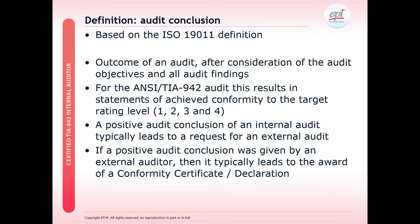Under the ANSI TIA 942 audit, this will result in statements of conformity achievement to a particular rated level. With TIA, we have rating levels 1, 2, 3 or 4. A positive audit outcome from an internal audit program typically leads to a request for an external audit. If a positive audit conclusion is given by an external auditor from a certification body, it typically leads to the award of a conformity certificate or conformity declaration.